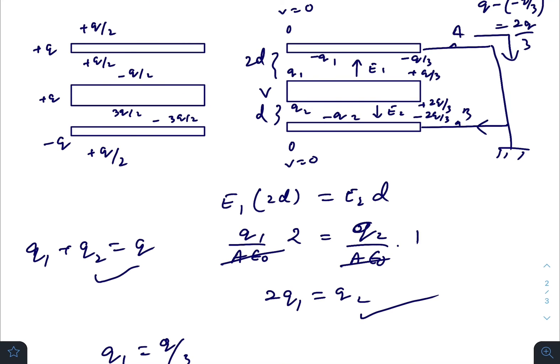The amount of charge is minus q minus minus 2 by 3, so that will be q by 3 and its magnitude. So q by 3 amount of charge have flown via this switch into the plate.